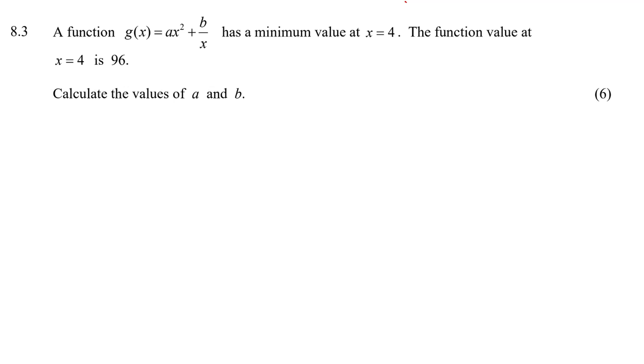A function g(x) = ax² + b/x has a minimum value when x is 4. The function value when x is 4 is 96. Calculate the values of a and b.